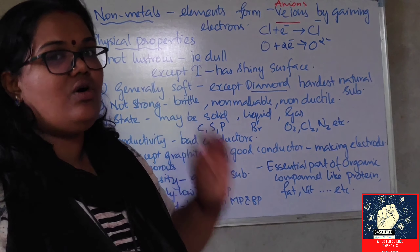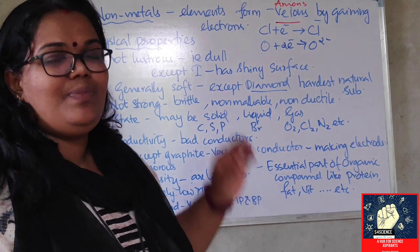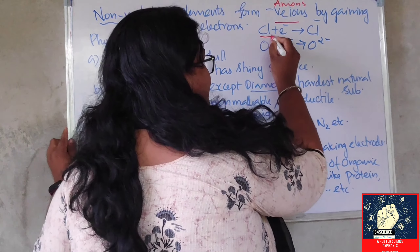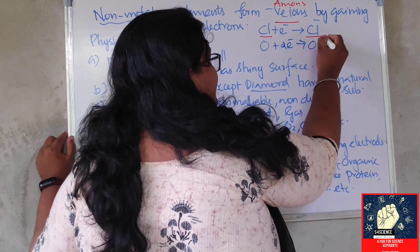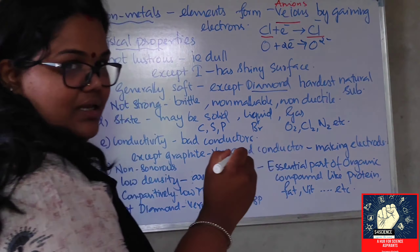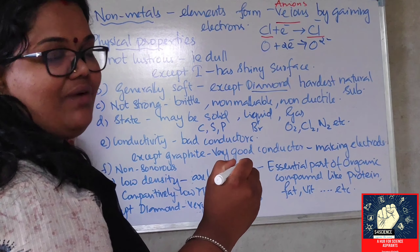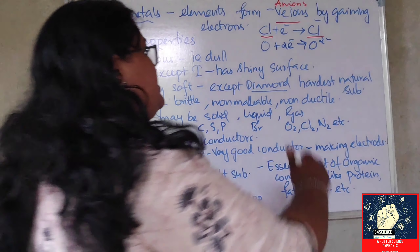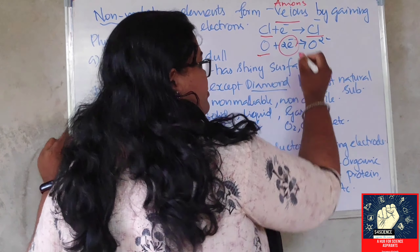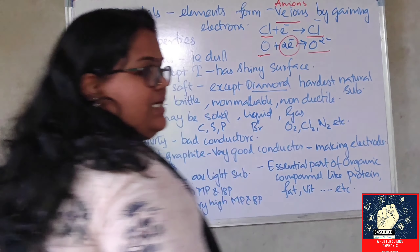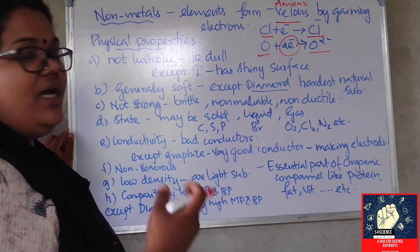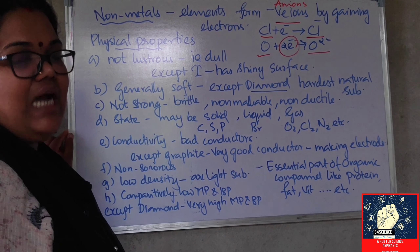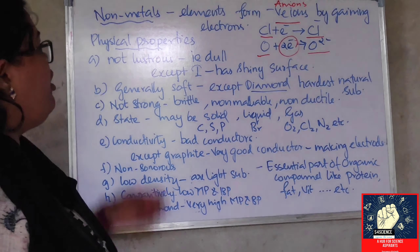Nonmetals are those elements which will form negative ions by gaining electrons. For example, chlorine will gain one electron and form Cl⁻ (chlorine one minus). What about oxygen? Oxygen will gain two electrons and form O²⁻. So oxygen is also a nonmetal which gains electrons and forms negatively charged ions, or anions.